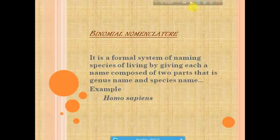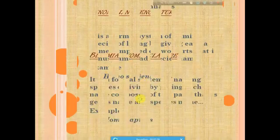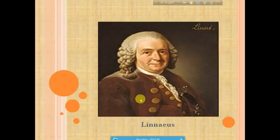For example, Homo sapiens means humans — here Homo is the genus name and sapiens is the species name. It is usually credited to Carolus Linnaeus, who used it in his book Species Plantarum.